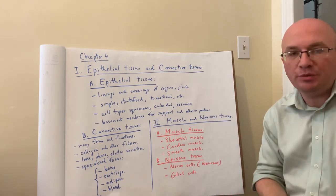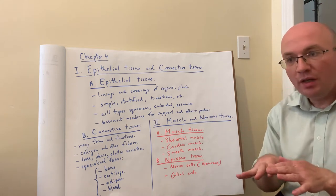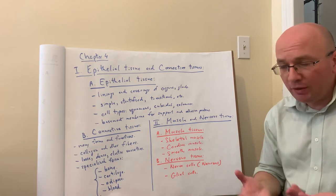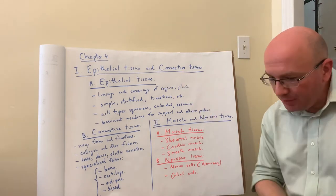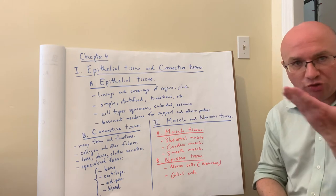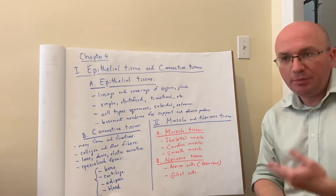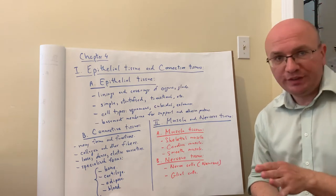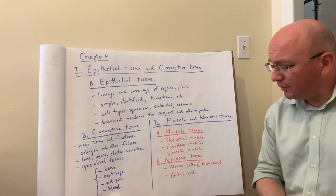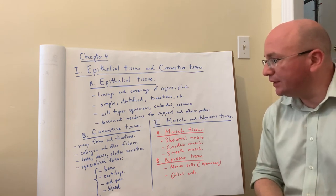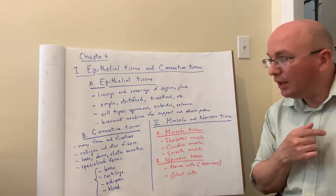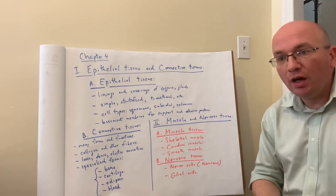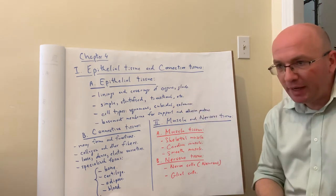These cells protect the structures and allow for absorption of molecules. How do we categorize epithelial tissue? Since this is histology, we're looking under a microscope. Whatever we see under a microscope determines how we describe it. If we see one layer of cells, we call this simple epithelium. If we see more than one layer, we call this stratified epithelium. If we see a different mixture of cells, we call this transitional.